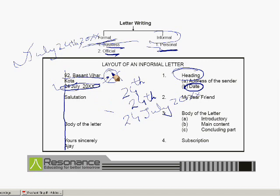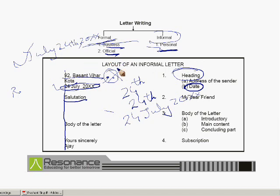Once the heading part — including the address and the date — is over, the next important thing is the salutation part. Salutations can be different depending on whom you are writing to. If writing to relatives: My Dear Father, My Dear Mother, My Dear Sister, My Dear Brother. To friends: My Dear Friend. It can also be to acquaintances, professors, teachers, or lecturers. Generally, informal letters are written to friends and relatives. For example, if writing to a friend, the salutation will be 'My Dear Friend' — M should be capital and F should be capital. Don't put any comma after it, as that will be wrong.